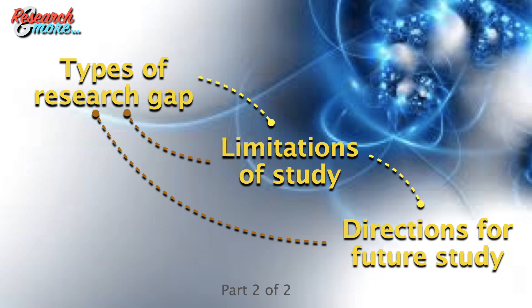This video is structured into two sections. Section 1 explains the different types of research gap. Section 2 illustrates how research gaps can be derived from limitations of study and directions for future research.